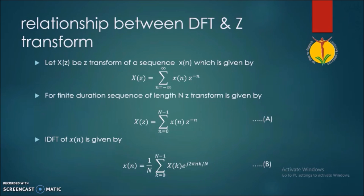Let us see the relationship between the DFT and the Z transform. The Z transform of a sequence X(n) is given by the equation X(Z) equals summation from n equals minus infinity up to infinity of X(n) into Z raised to minus n. But for the finite duration sequence...